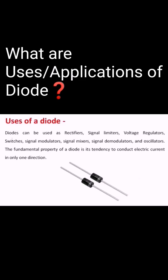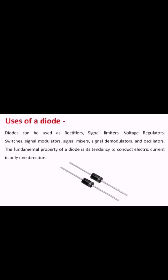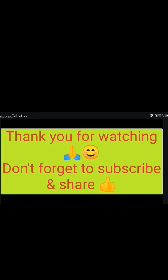What are the uses or applications of a diode? Diodes can be used as rectifiers, signal limiters, voltage regulators, switches, signal modulators, signal mixers, signal demodulators, and oscillators. Kindly subscribe to this channel.